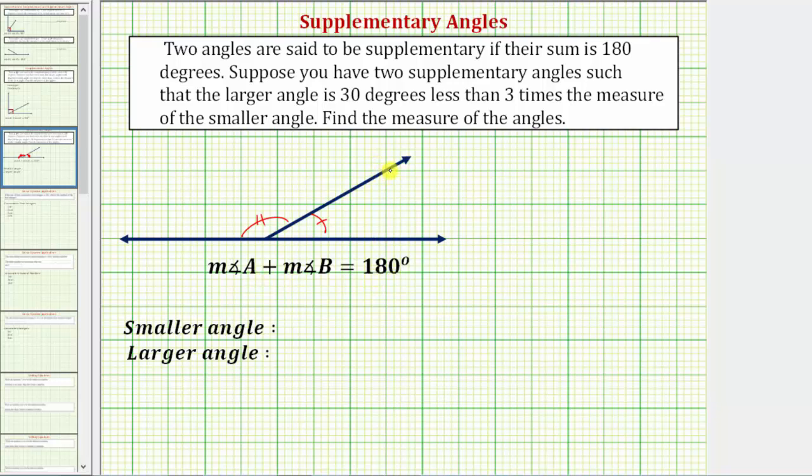This also means if we put the two angles together, they would form a straight angle. So suppose you have two supplementary angles, such that the larger angle is three degrees less than three times the measure of the smaller angle. We're asked to find the measure of the angles.